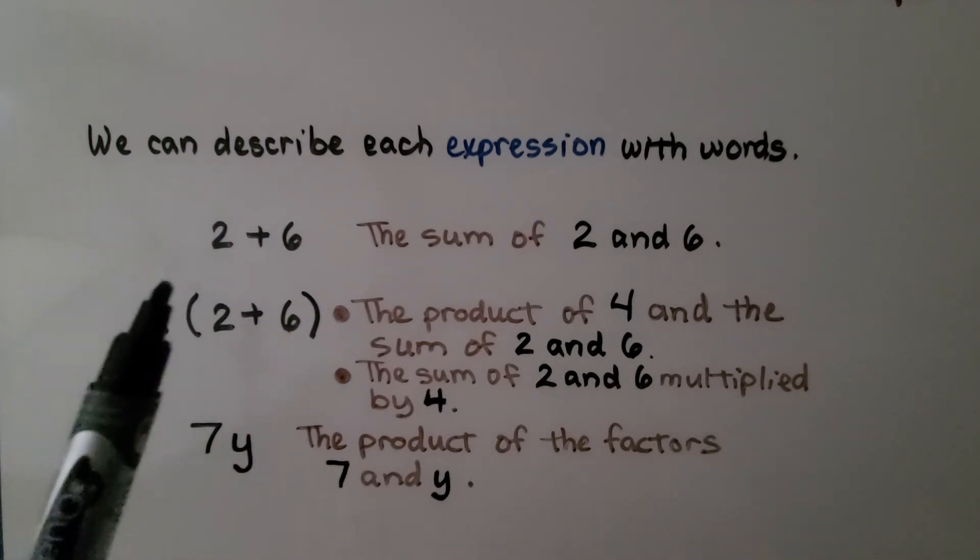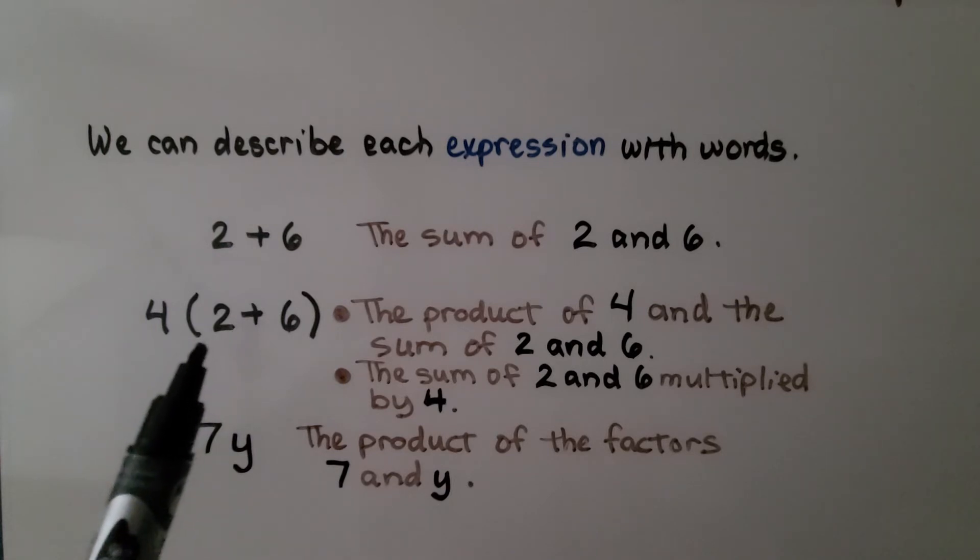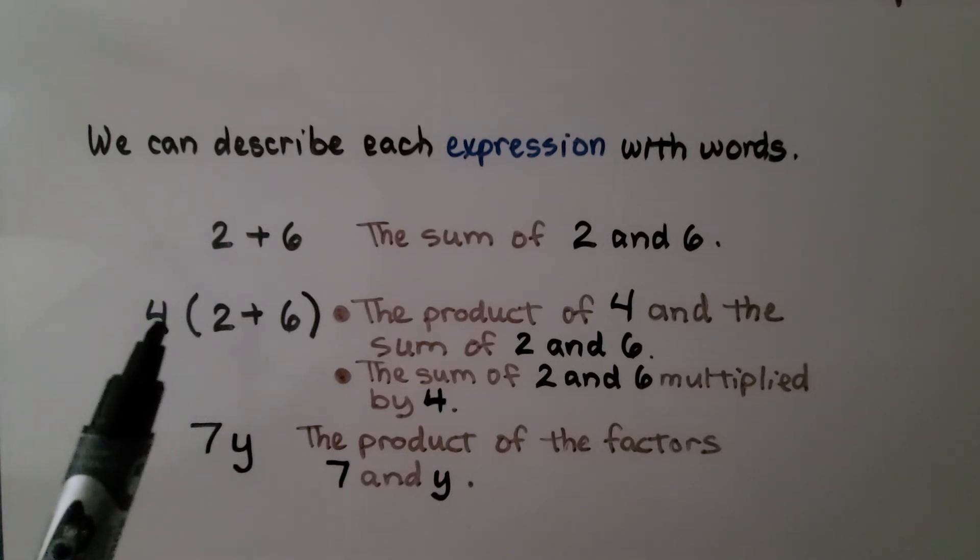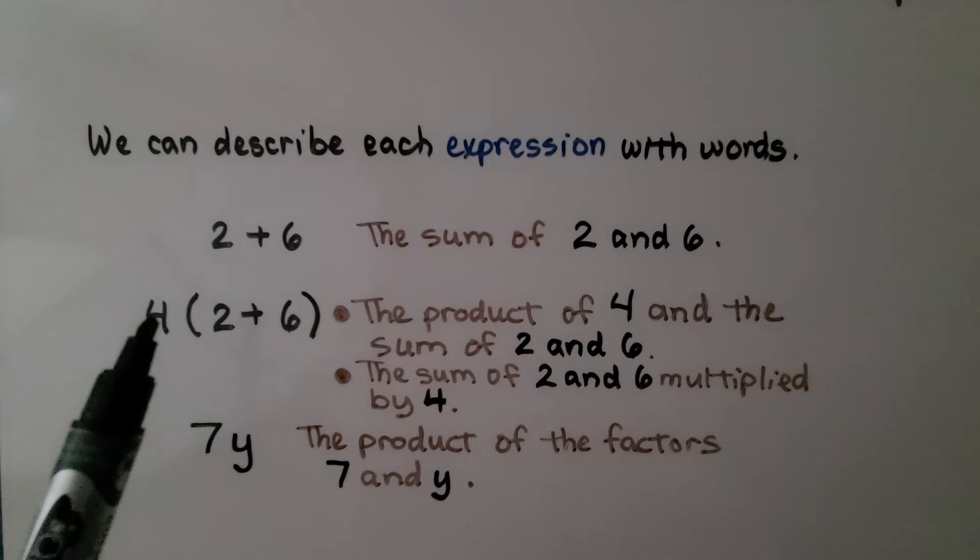Here we have 4 times 2 plus 6 in parentheses. This can be described as the product of 4 and the sum of 2 and 6. We can also say the sum of 2 and 6 multiplied by 4.